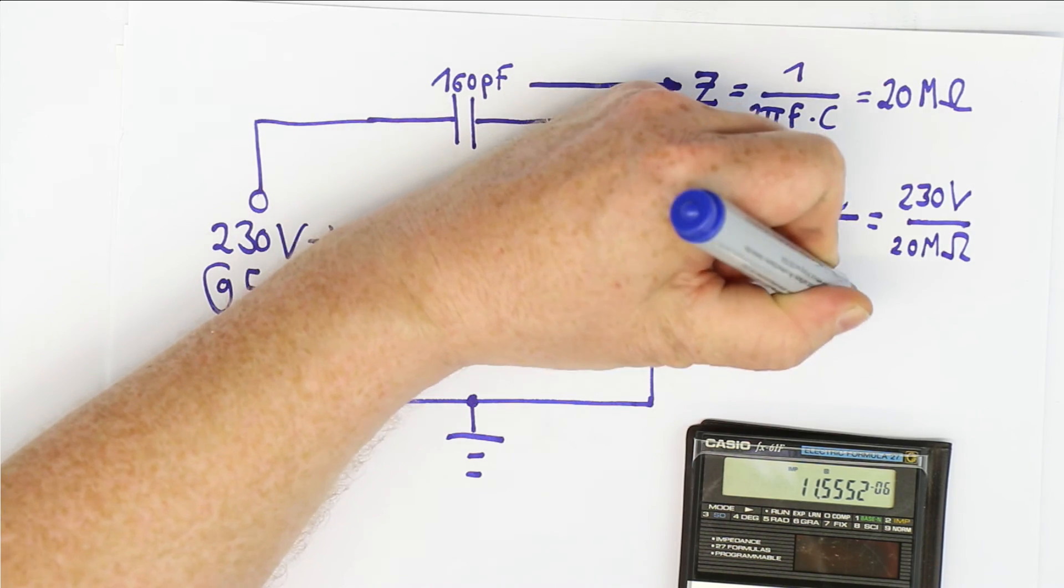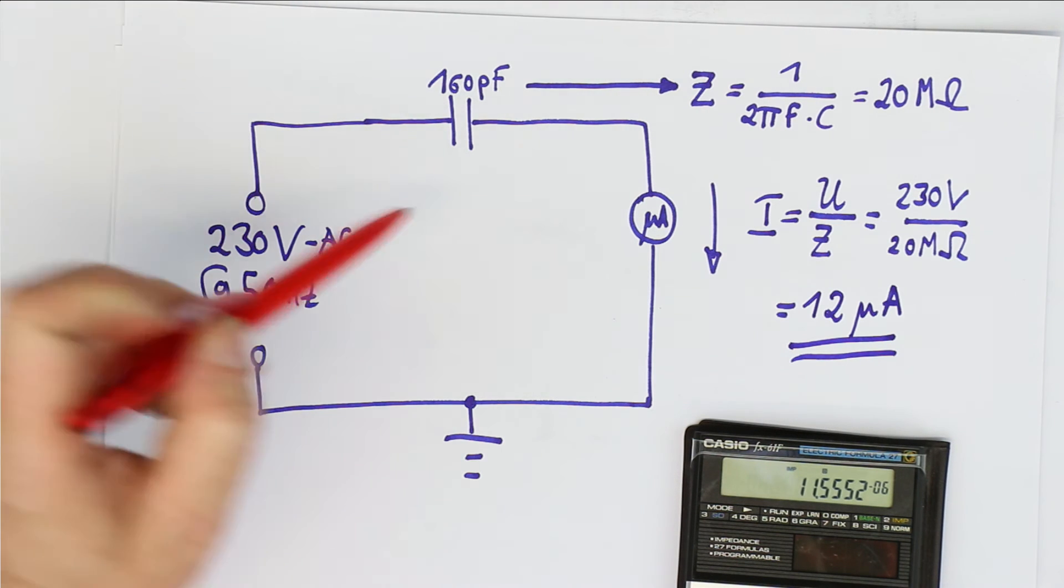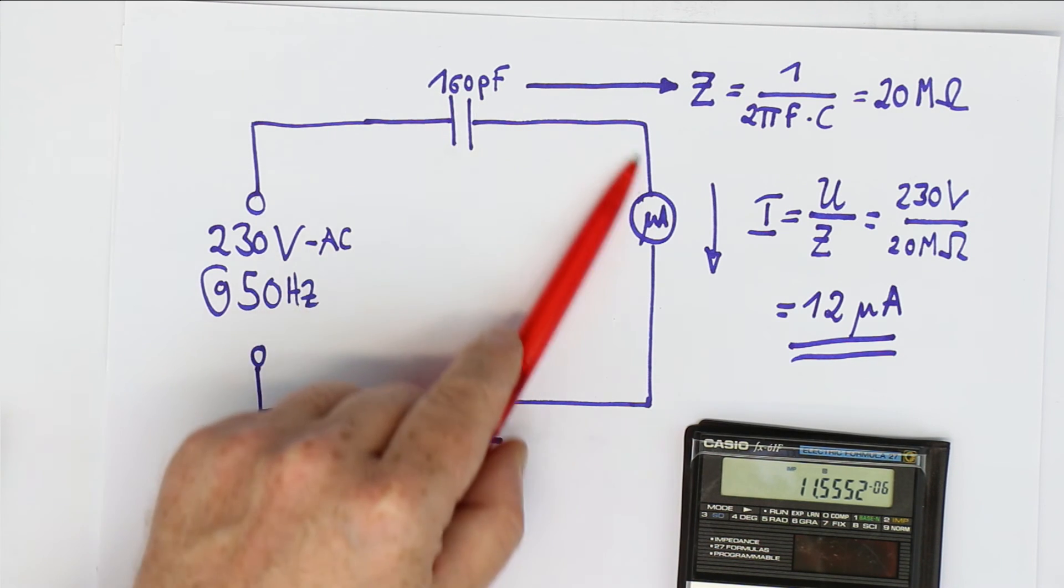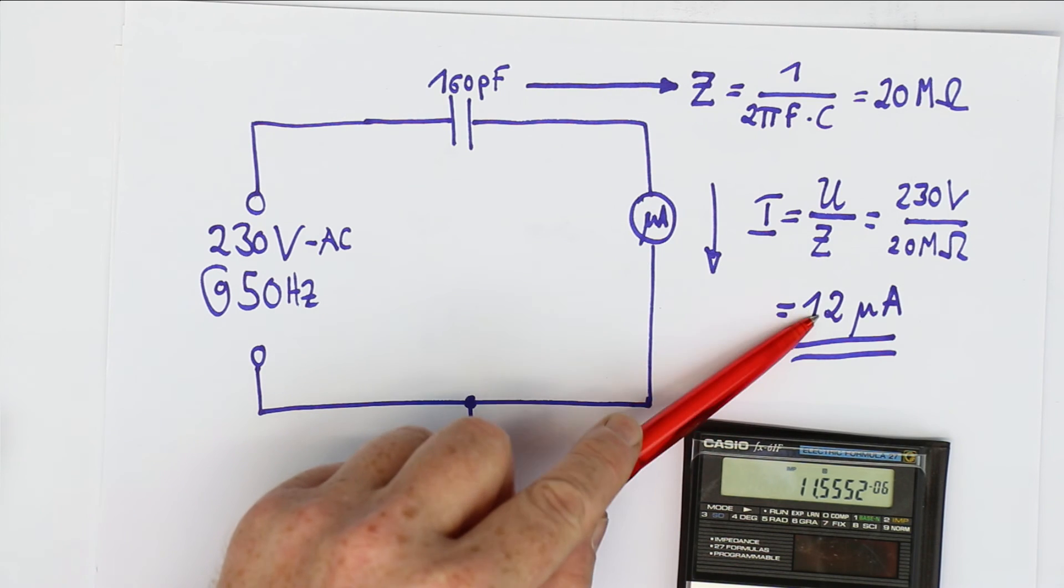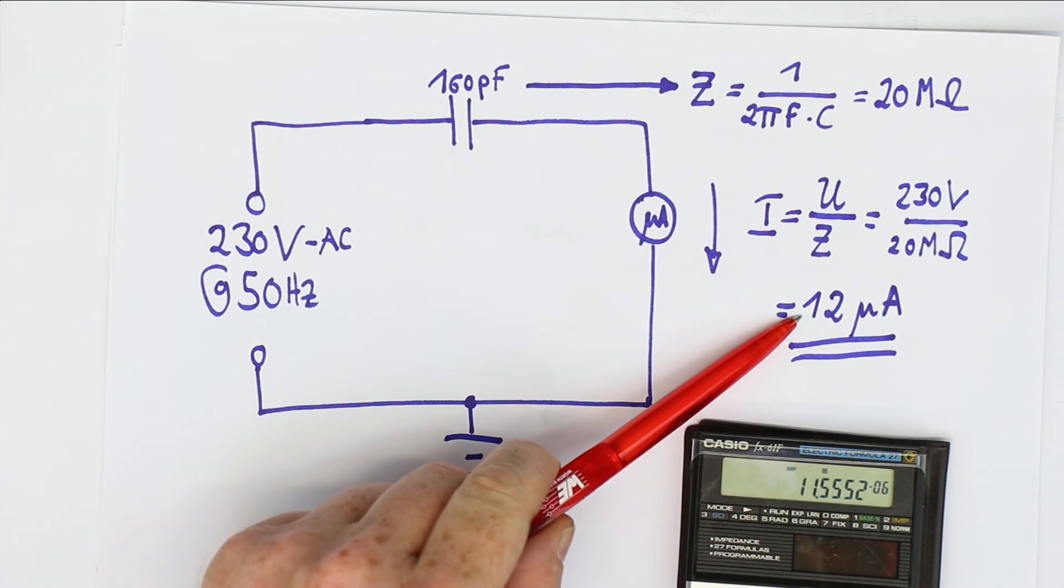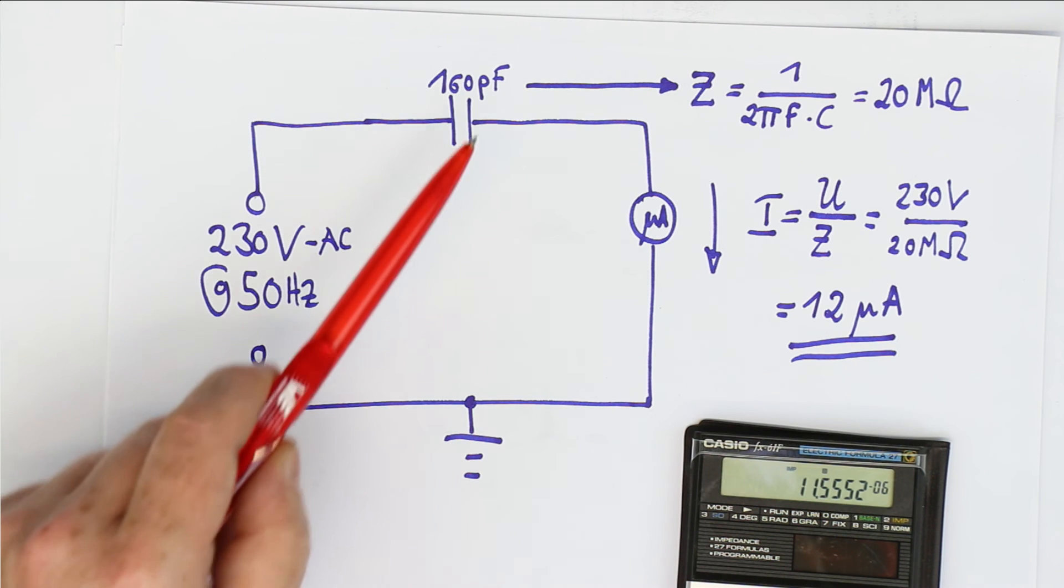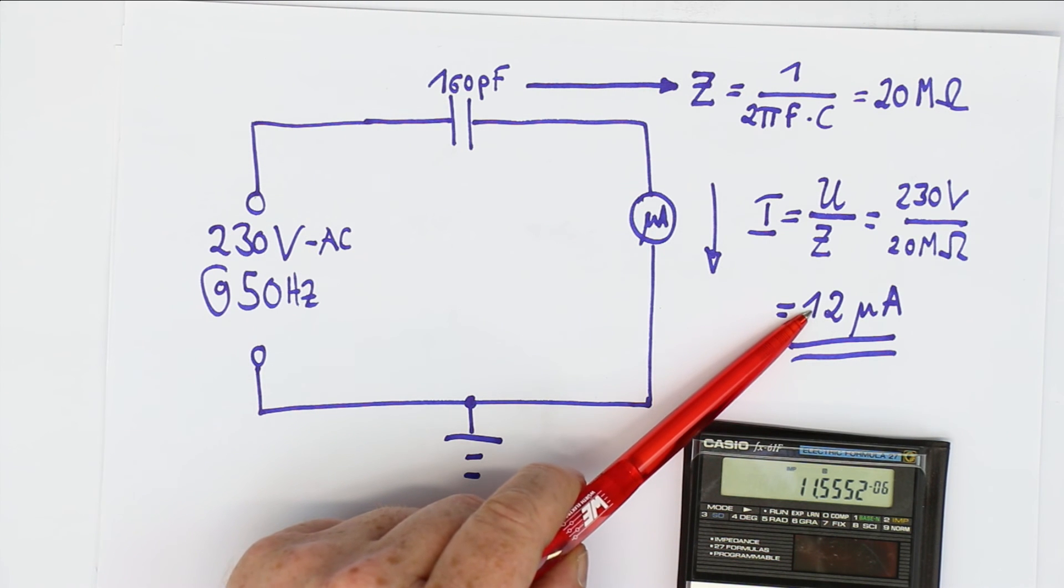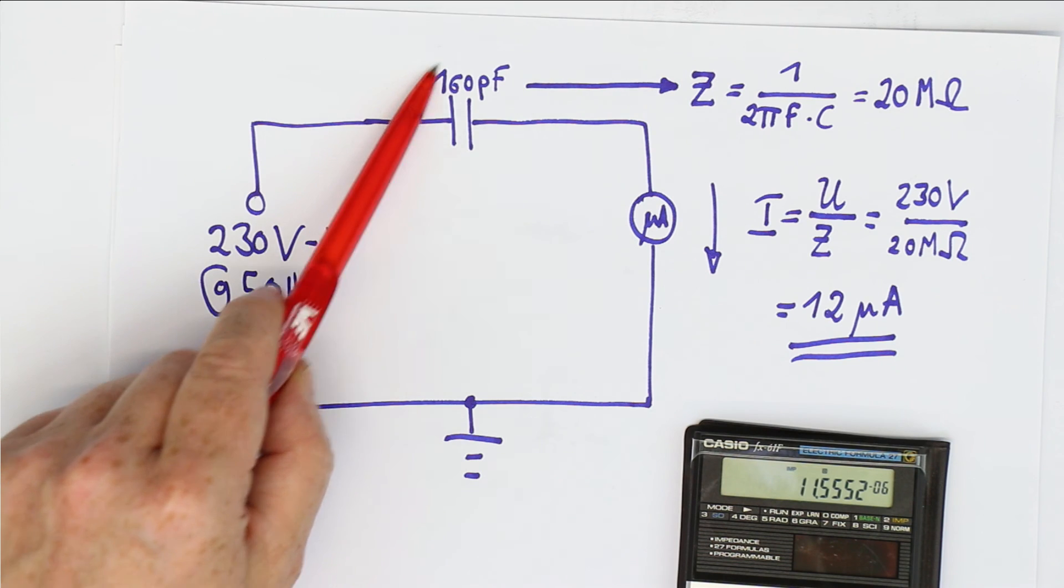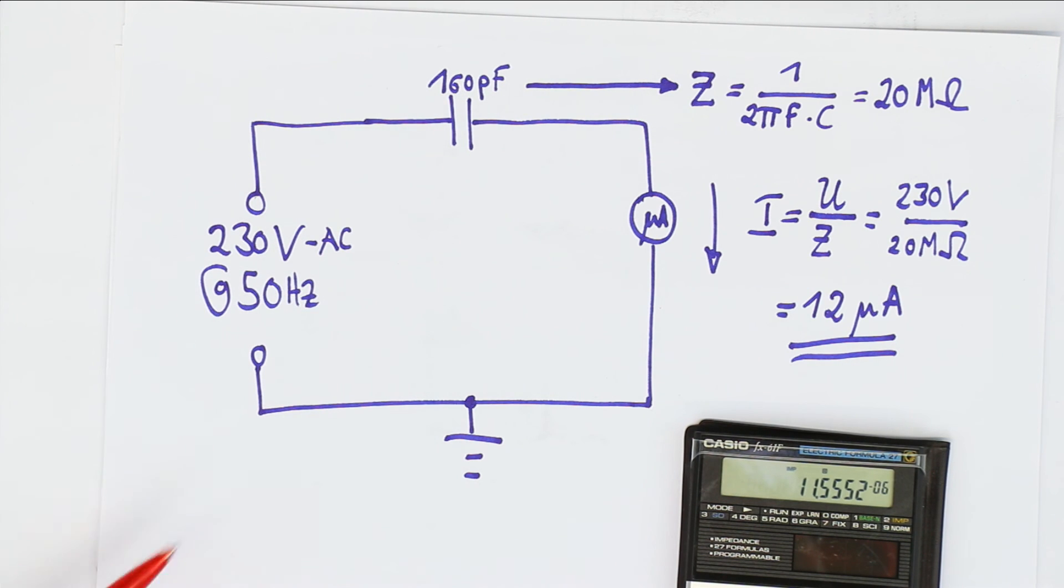That's around what we have measured, so we have confirmed that the stray capacitance between primary and secondary side is responsible for the current in the range. Of course, the measurements are not very exact, but the values are quite near to what we calculate and what we measure. The current of 12 microamps flowing from mains down to earth is explained by the stray capacitance of around 160 picofarads here between the primary and secondary winding of our transformer.